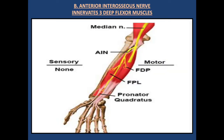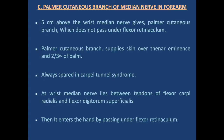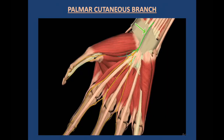This diagram shows the muscles supplied by the anterior interosseous nerve. Regarding the palmar cutaneous branch: five centimeters above the wrist, the median nerve gives off the palmar cutaneous branch, which does not pass under the flexor retinaculum. This branch supplies the skin over the thenar eminence and two-thirds of the palm. It is always spared in carpal tunnel syndrome because it does not pass under the retinaculum. At the wrist, the median nerve lies between the tendons of flexor carpi radialis and flexor digitorum superficialis, then enters the hand by passing under the flexor retinaculum.